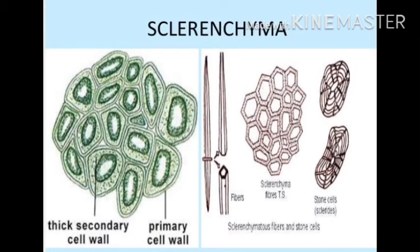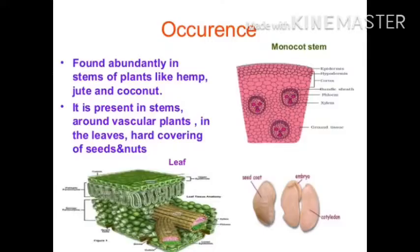First, I want to discuss a little more about the sclerenchyma in this video. The occurrence of sclerenchyma: found abundantly in the stem of plants like hemp, jute and coconut. It is present in the stem around the vascular bundle, in the leaves and the hard coating of seeds and nuts. The cells of these tissues are dead. They are long and narrow as walls are thickened due to lignin, a chemical substance which acts as cement and hardens them.